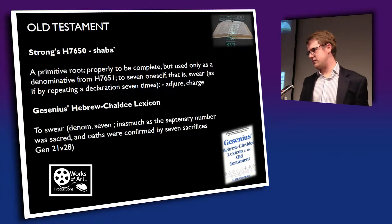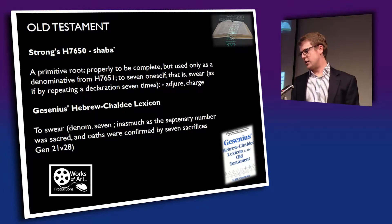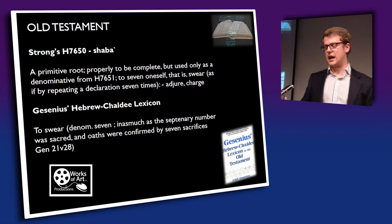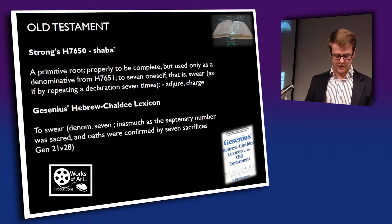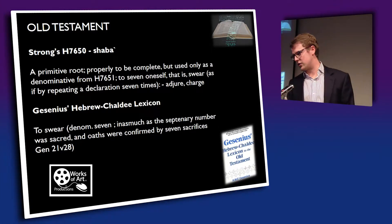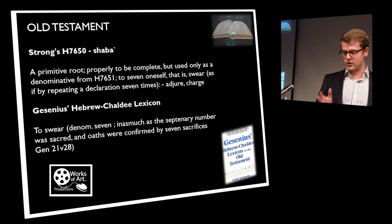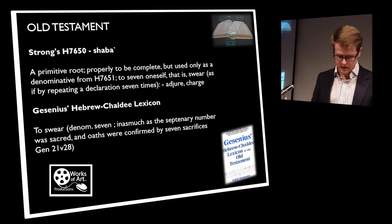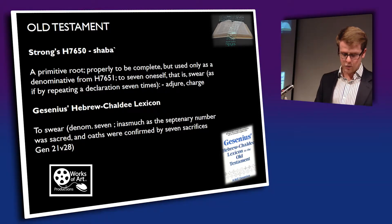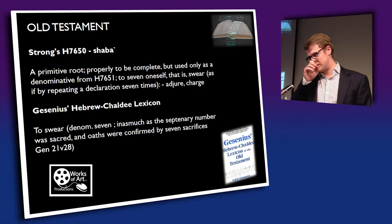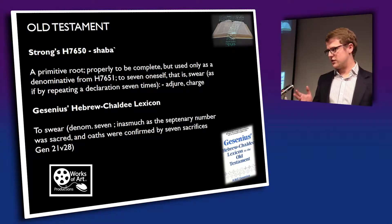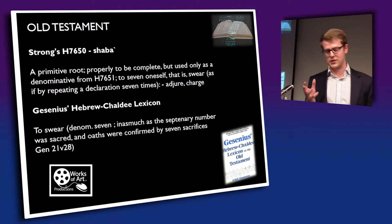We can see here how the number seven is used to represent an oath or a covenant. Here we have the seven ewes, and interestingly he goes on to call the place Beersheba — the same word, 7651, that we saw. My margin says 'well of oath.' Scripture is giving us a first link between the number seven and an oath.